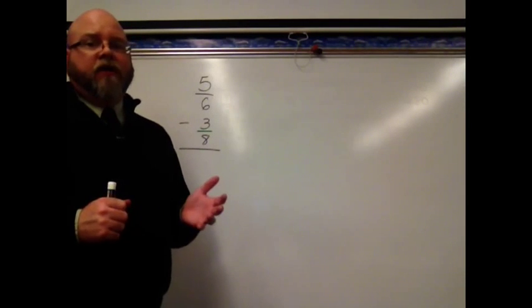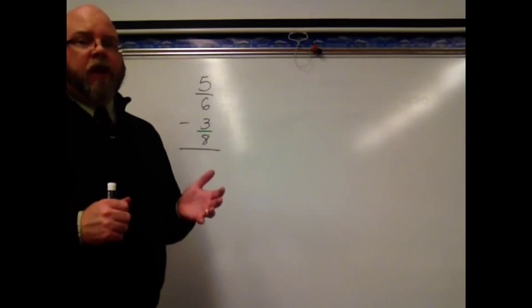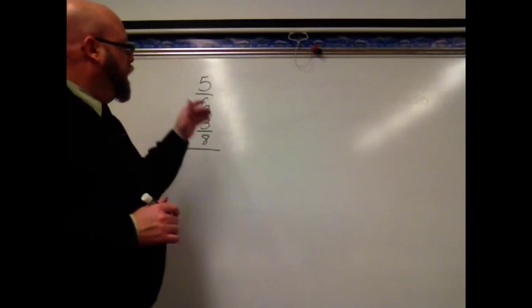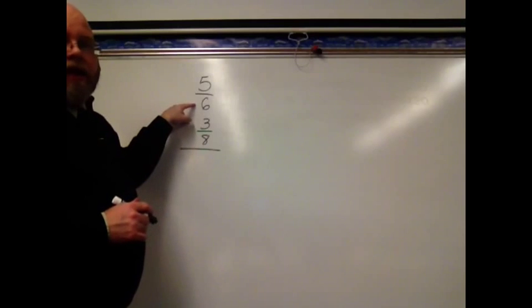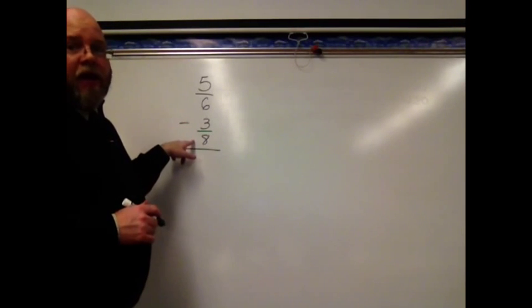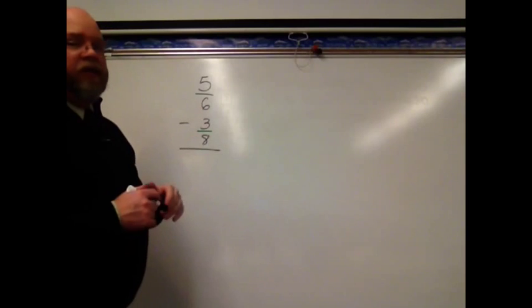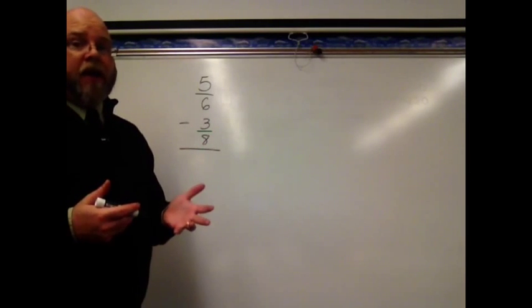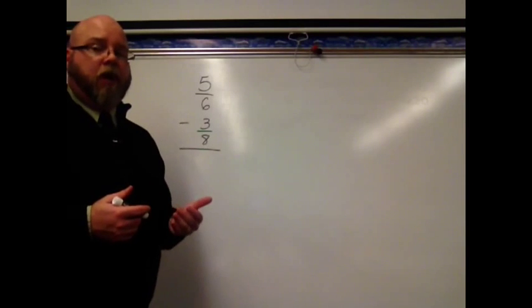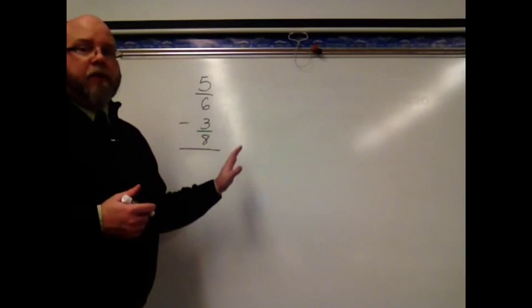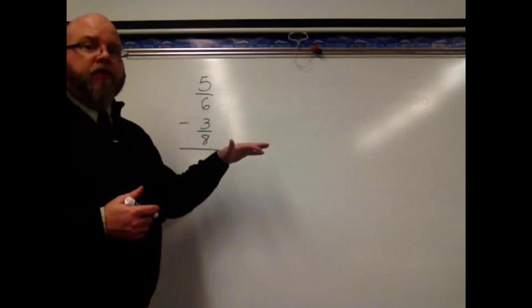Now, let's look at subtracting using the least common multiple as well. So I've got 5 sixths minus 3 eighths. I can't count by 6 and get to 8, and I can't count by 8 and get to 6. So I'm going to have to count by 6 and count by 8. Then find that number, that multiple that they have in common that's the smallest one. So I can rename my fractions with like denominators and then subtract.